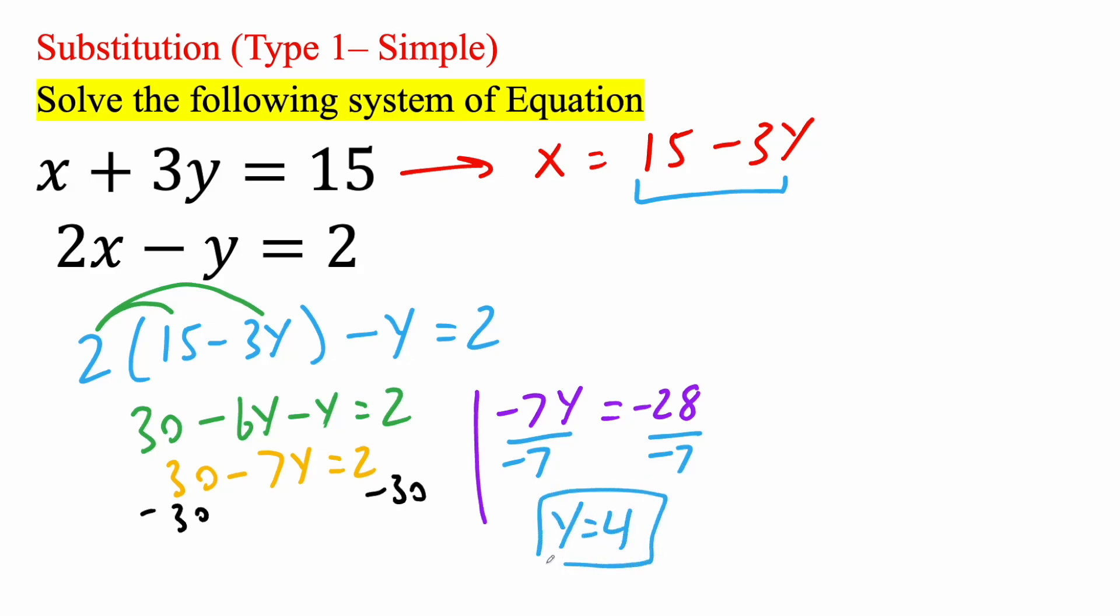Once we know y, getting x will be very easy. All we have to do is replace y with what it is. So we said y is going to be 4. So x is equal to 15 minus 3 times 4, which is equal to 15 minus 12. So now we have x is equal to 3.